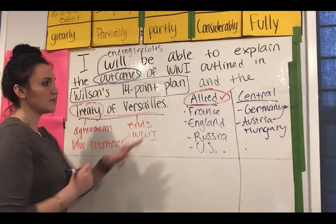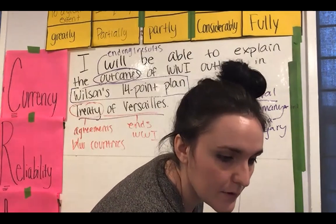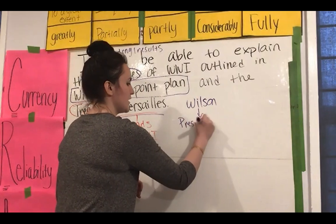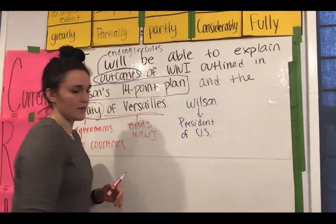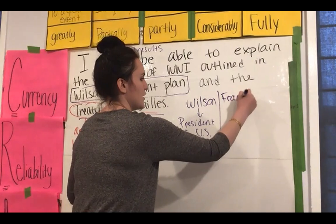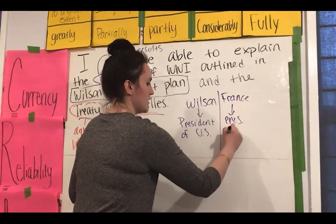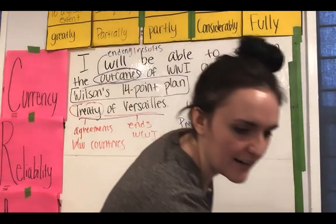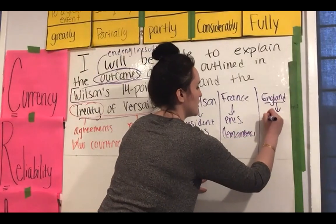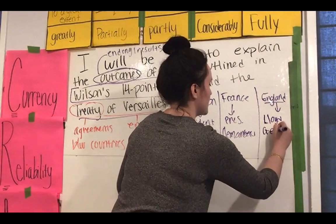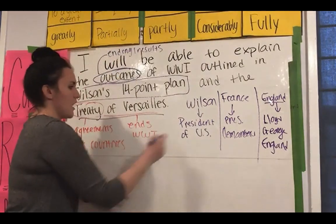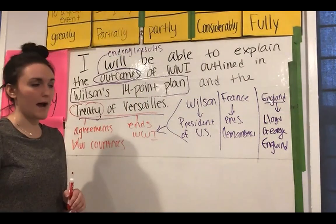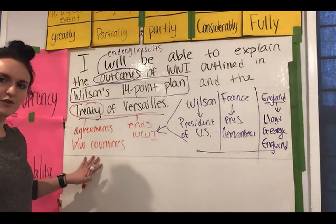You will also be studying Wilson's 14-point plan. Wilson — Woodrow Wilson — is the president of the US and one of the authors of the Treaty of Versailles. Another author was the leader of France, and finally David Lloyd George of England. These are the three authors of the Treaty of Versailles, and they're also the leaders of each of the Allied powers.